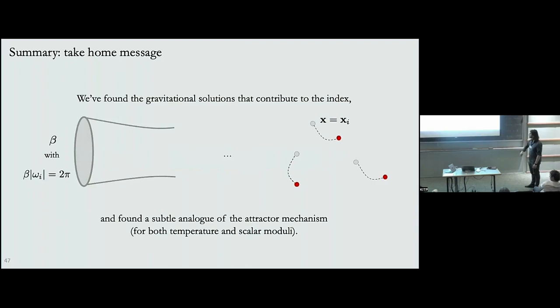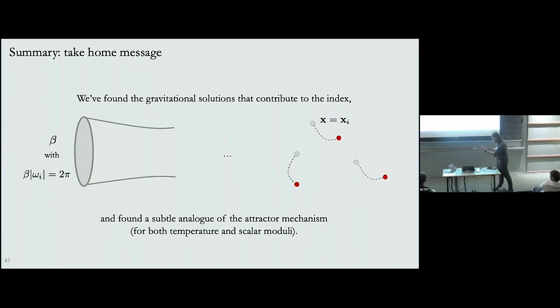What's beautiful, once again as happened in Israel-Wilson, is that the overall Gibbs free energy is completely independent of the scalar moduli c and of beta. The fact that it's independent can be tracked down to the imposition of these smoothness constraints in Euclidean signature. We can proceed similarly for multi-center cases. The take-home message is that we found gravitational solutions contributing to the index, and found a subtle analog of the attractor mechanism for both temperature and scalar moduli, where it's no longer the area but the overall contribution to the partition function that is the physically invariant quantity.